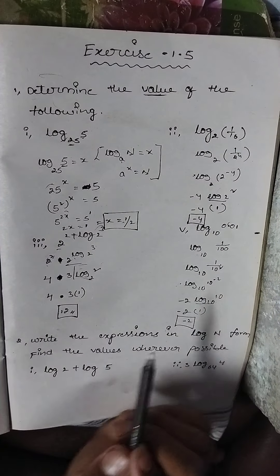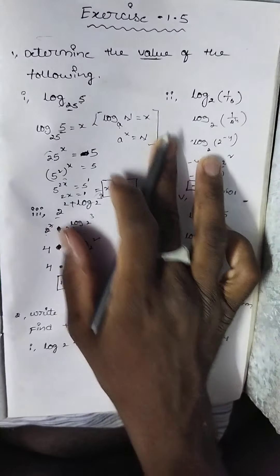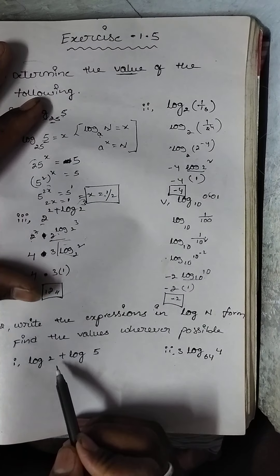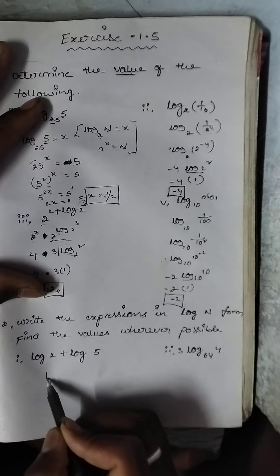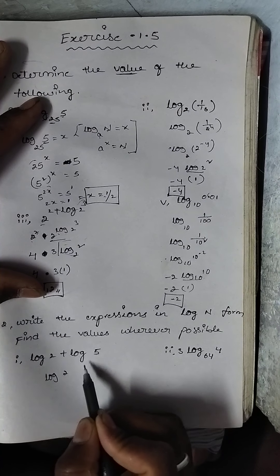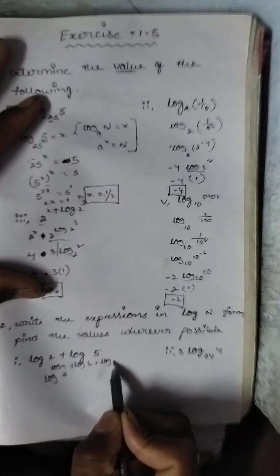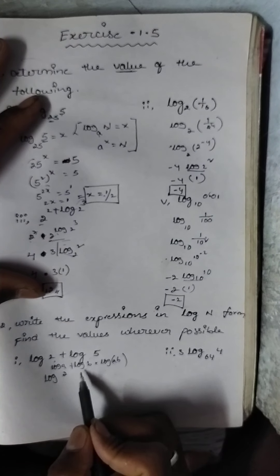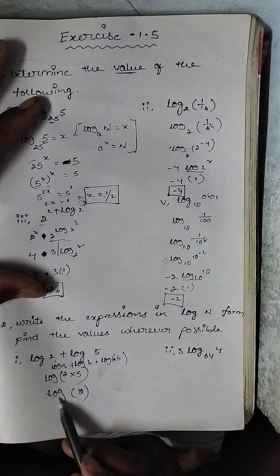Now the second part: write the expressions in log n form and find values wherever possible. Each expression must use the log formula. The first expression is in the form log a + log b. Using the formula log a + log b = log(ab), with a = 2 and b = 5, we get log(2 × 5) = log 10. This is the required log n form answer.